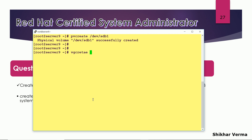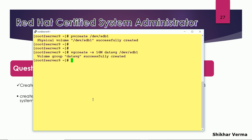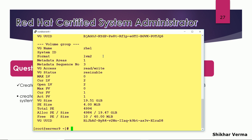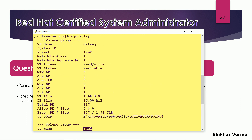Now I am going to create the volume group. For the volume group we have to specify the option -s for extent size: physical extent size 16 MB, volume group name data VG, and the disk is sdb1. The VG has been created. Running vgdisplay, you can see the data VG volume group and the PE size is 16 MB.